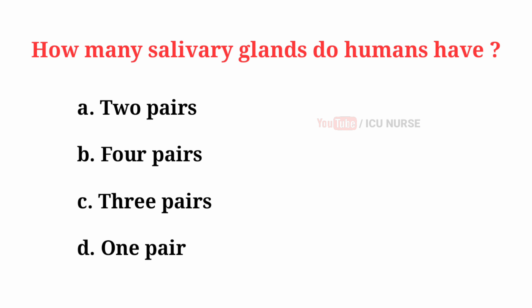How many salivary glands do humans have? The correct answer is C: Three pairs.